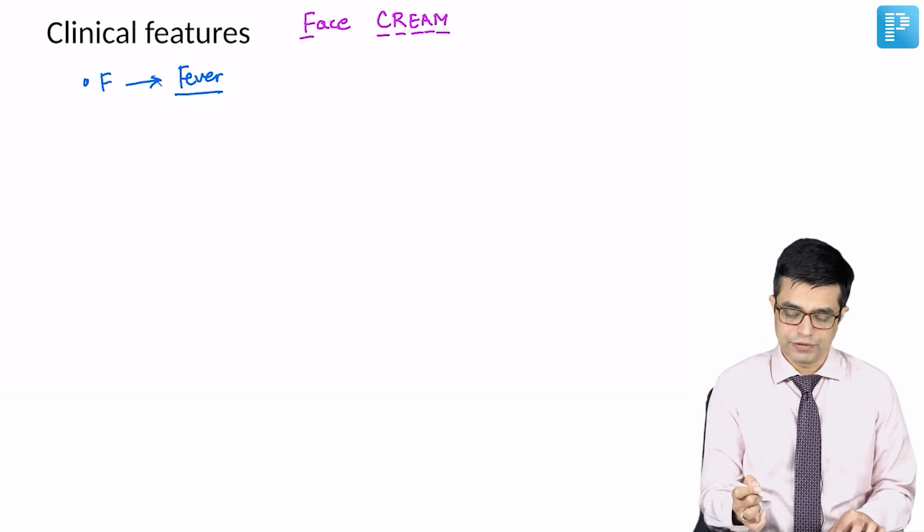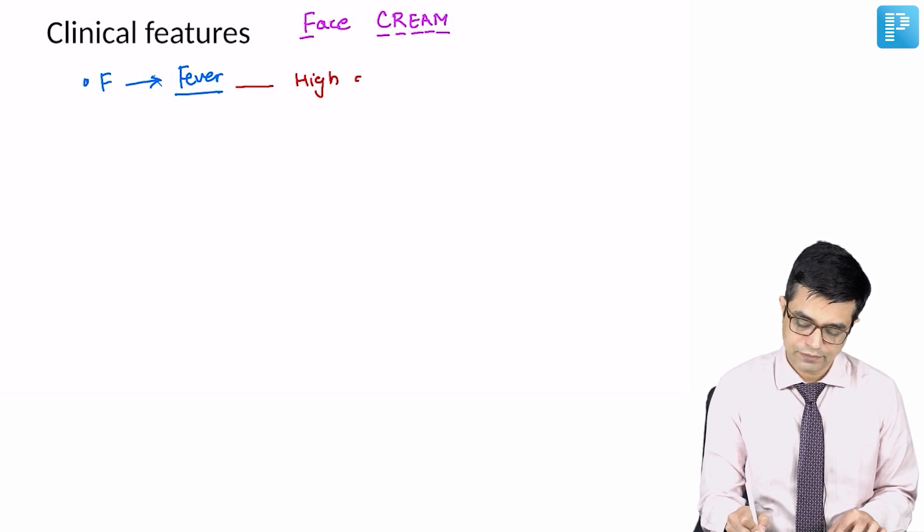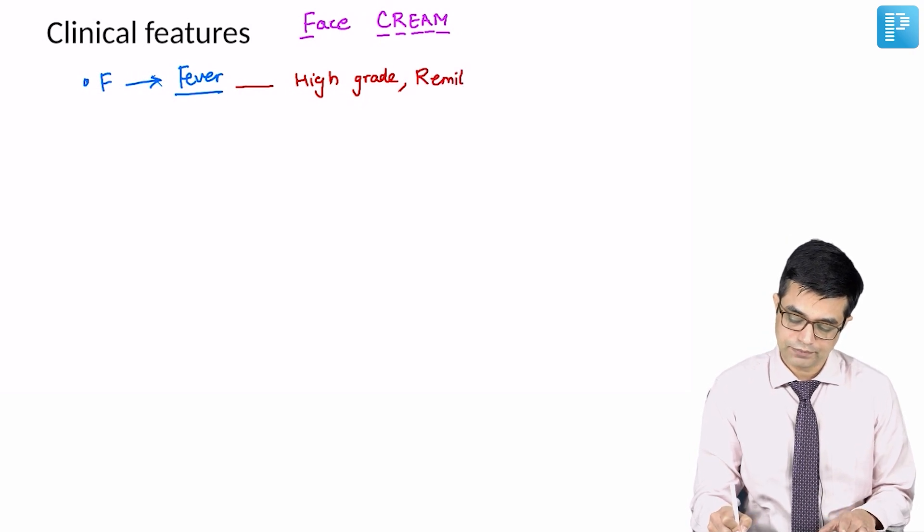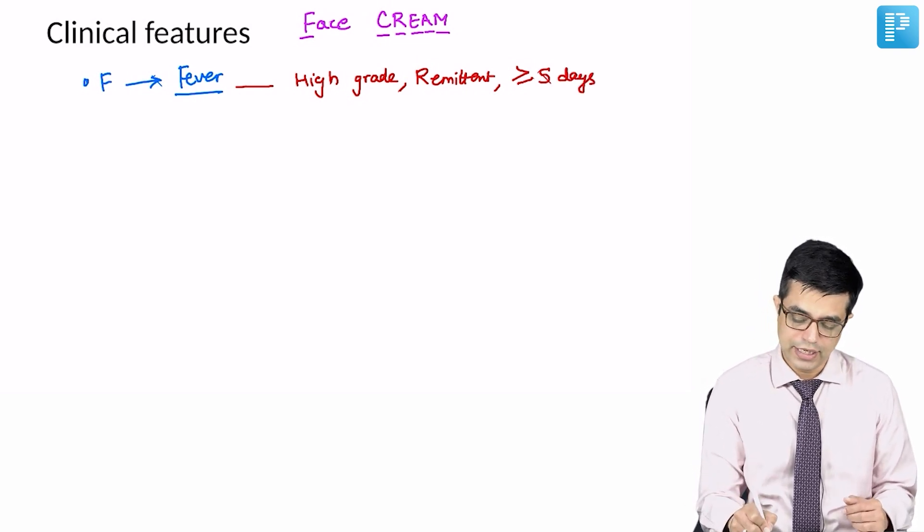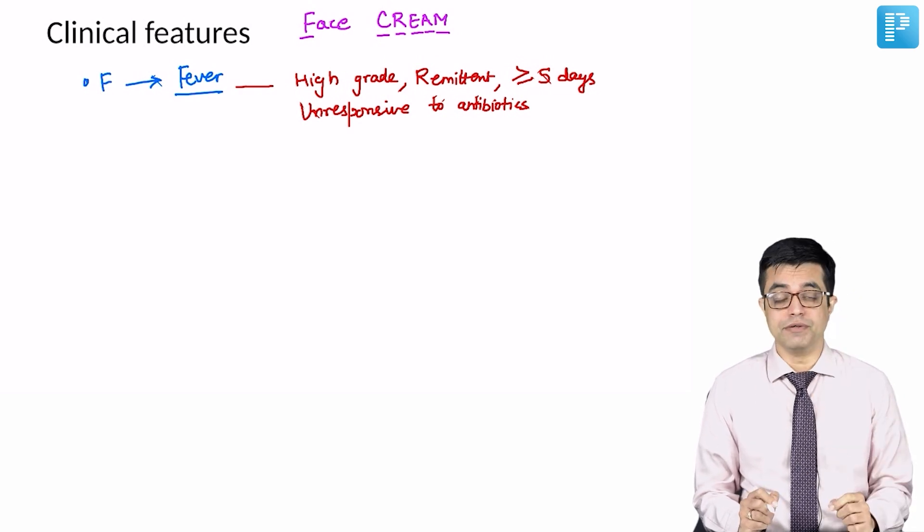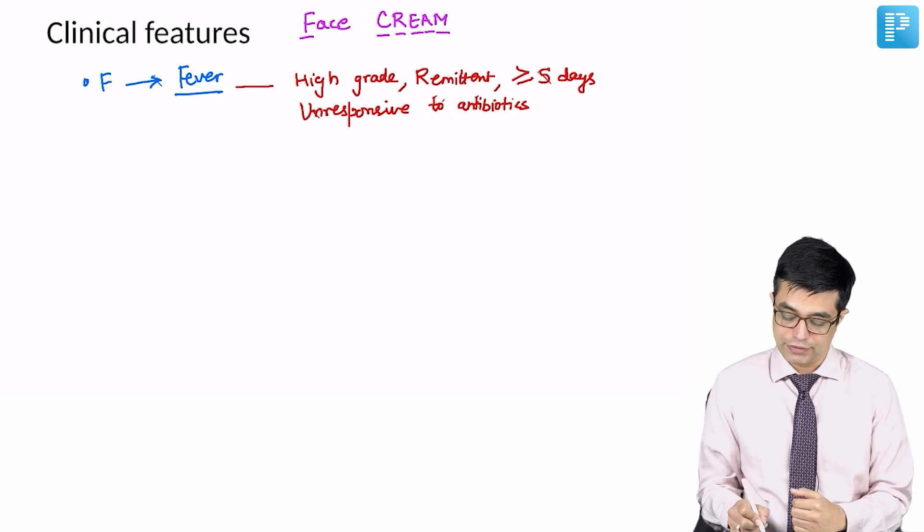What are the characteristics of fever that you should remember? Fever in Kawasaki disease is high grade, remittent, comes daily, and lasts for five days or longer. In only one or two day fever, you will not think of Kawasaki disease as the diagnosis. It is unresponsive to antibiotics. Fever is considered to be the sine qua non, meaning there cannot be Kawasaki disease without fever being present.